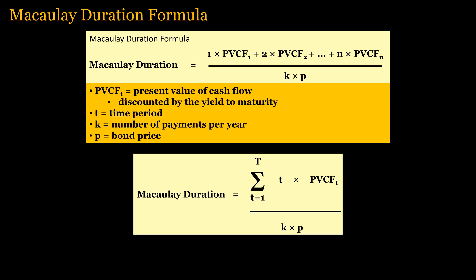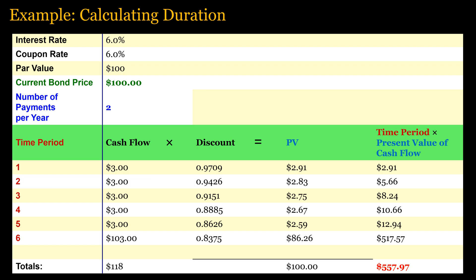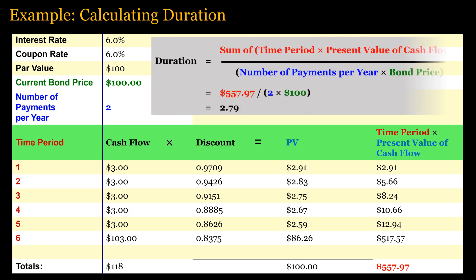This is the formula for the Macaulay duration. You do not need to memorize this formula, since it can easily be calculated using spreadsheets. The formula depends on the present value of each cash payment discounted by the bond's yield to maturity. The bottom equation shows the Macaulay duration formula in sigma notation. Consider a 3-year bond with a par value of $100, a coupon rate of 6%, and a current yield of 6%. Discount the cash flows by the market interest rate, multiply each by the time period, add the results, then divide by the product of the number of bond payments per year and the current bond price. For this example, the duration equals 2.79.